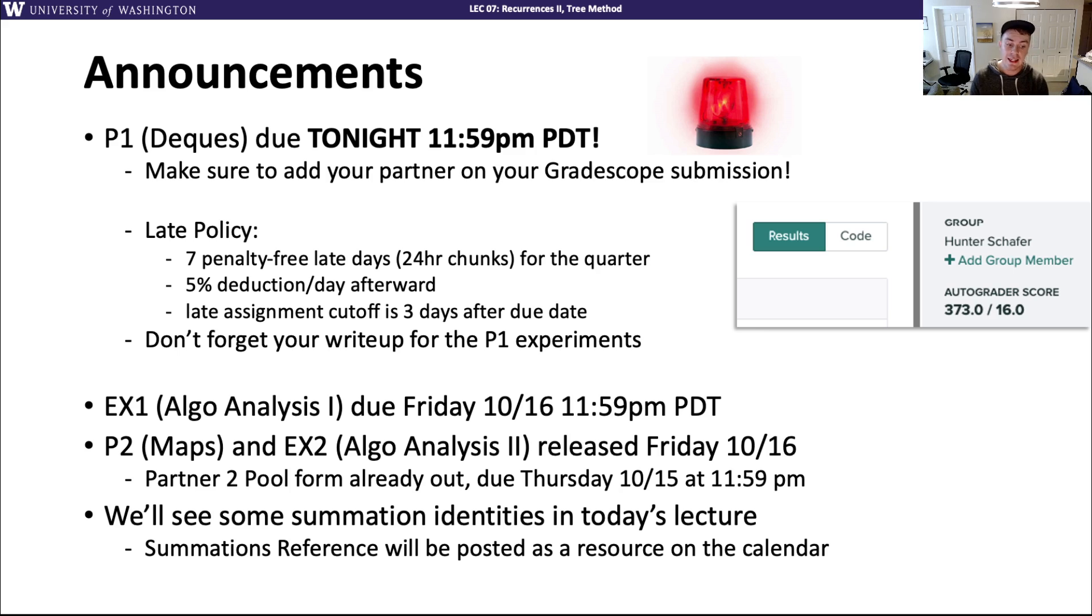As a reminder, you do have late days accessible. You have seven free late days you can use. It lets you turn in an assignment 24 hours late for the quarter. If you run out of late days, you can still turn assignments in late, but it will cost a modest 5% deduction for that day afterwards. No matter how many late days you have remaining, the late cutoff for any particular assignment is three days after the deadline.